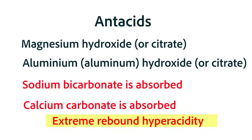What do we mean by rebound hyperacidity? Simplistically put, when you decrease the acid in the stomach with a simple antacid, the stomach realizes that it is not acidic enough and the parietal cells start releasing more acid instead of less.